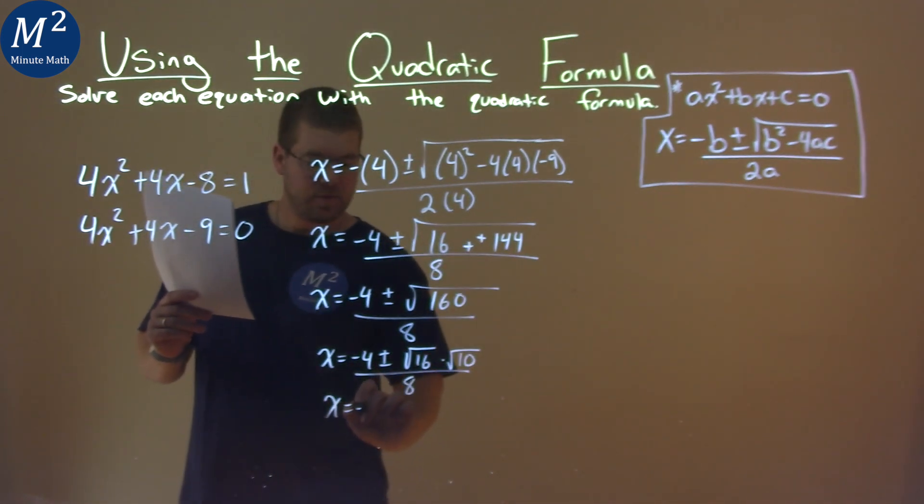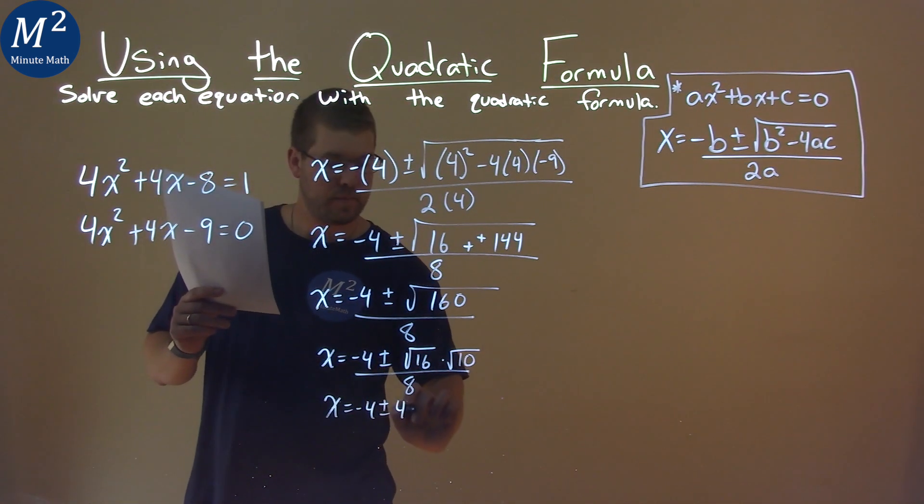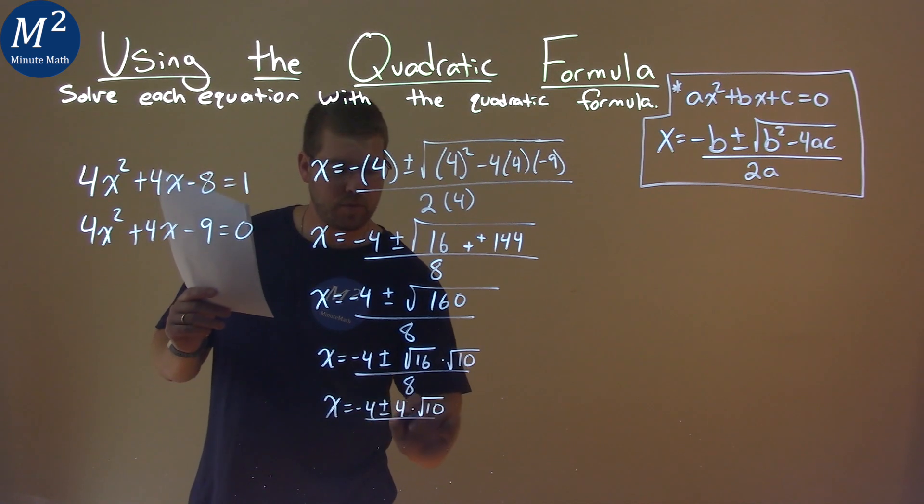Keep going, x equals negative 4 plus or minus, and the square root of 16 is 4, times the square root of 10, over 8.